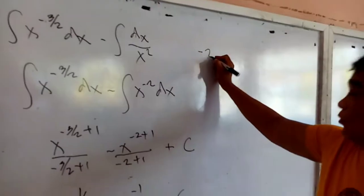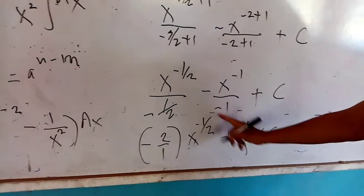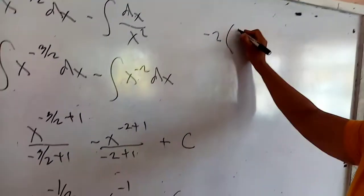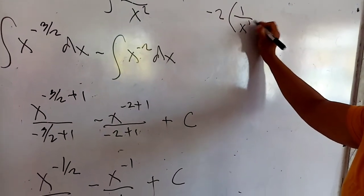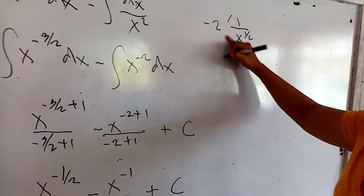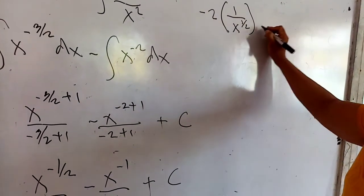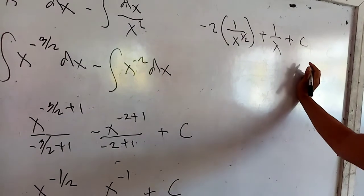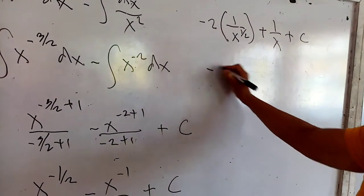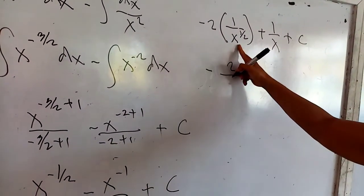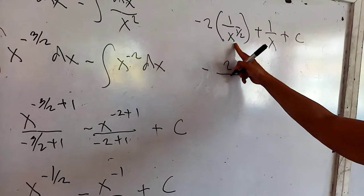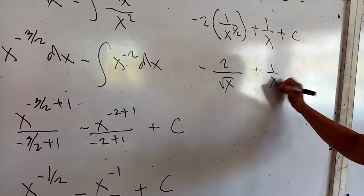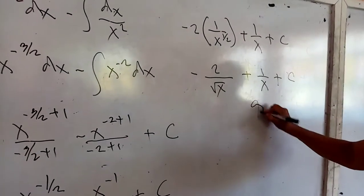Simplify it further — negative 2 — I have to bring it down — multiplied by 1 all over x to the positive one-half, then plus 1 all over x, plus the constant of integration c. When you multiply, that would be negative 2 all over — transposing back to radical — that would be the square root of x, plus 1 all over x, then plus the constant of integration c.